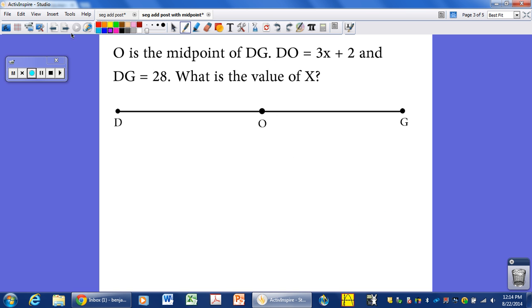Let's do another one. Here, in this case, we're given that O is the midpoint of DG. So we know that this is in the middle. So these two segments are going to be congruent. So let's mark that as being equal. DO is 3X plus 2. And DG is 28. So now remember, this is the entire length. The entire length is 28.